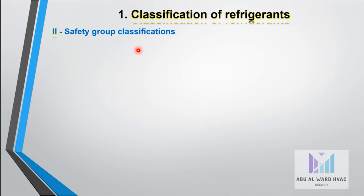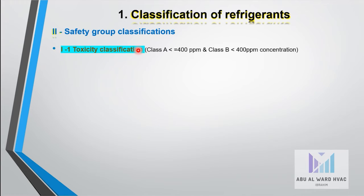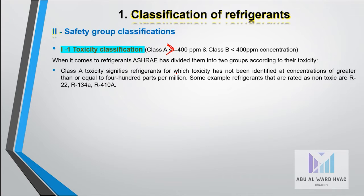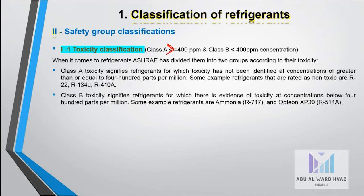Safety group classifications: there are mainly three classifications in this category. The first is toxicity classification. Toxicity class A is when the concentration in the refrigerant is greater than 400 ppm, and class B is less than 400 parts per million. Examples of class A include R22, R134a, and R414A.